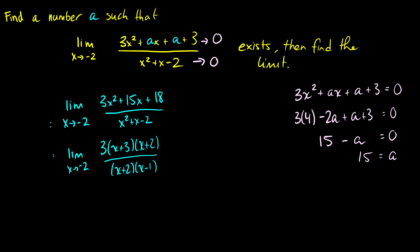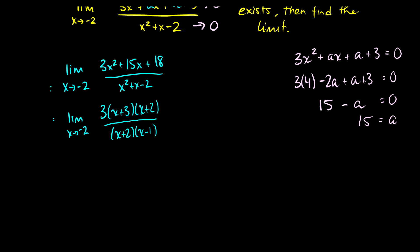Now we can cancel the (x + 2)'s. So we have the limit as x goes to negative 2 of 3(x + 3) over (x - 1).